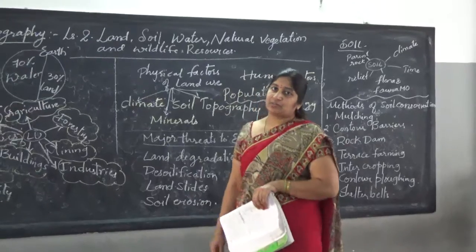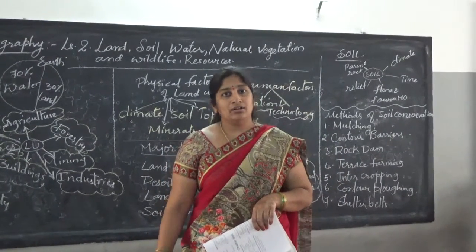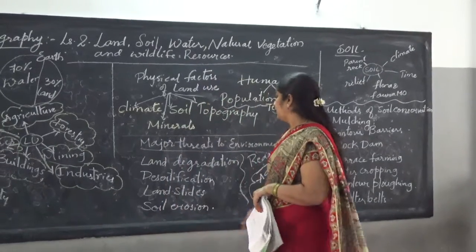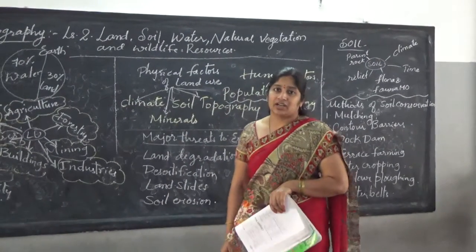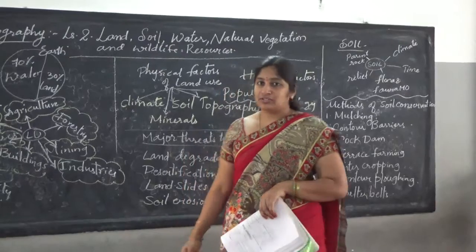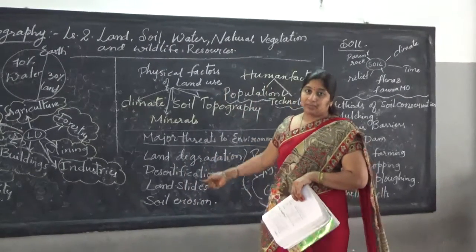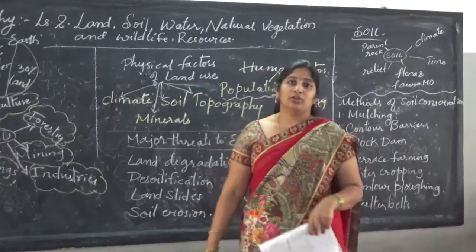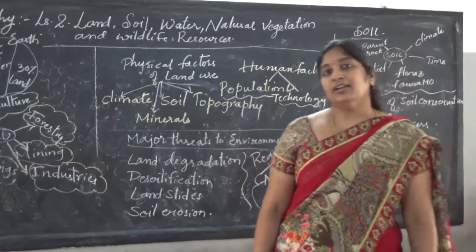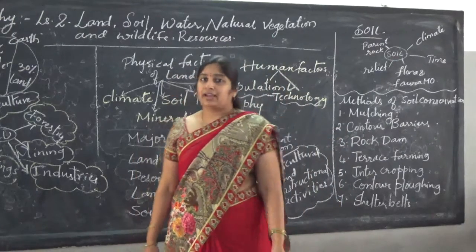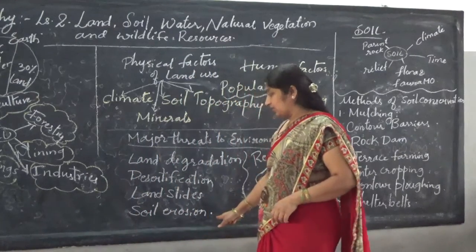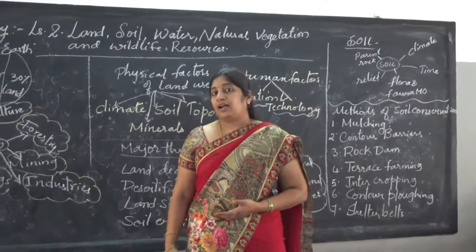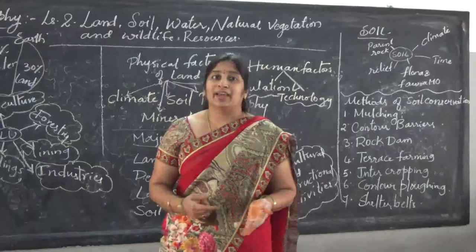Next is landslides, which is a natural calamity that occurs, and because of this the land becomes inhabitable. Then there is soil erosion. When rain or floods occur, most of the soil will be eroded. This happens only during floods or heavy raining events, and the most fertile soil on the land will be eroded.